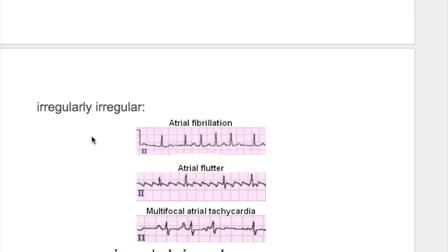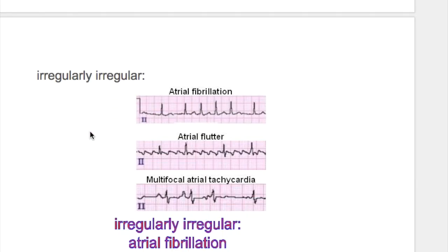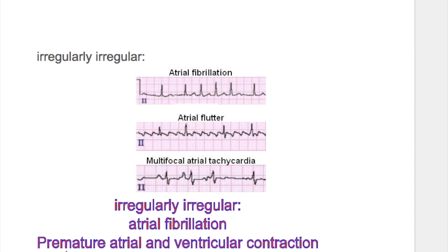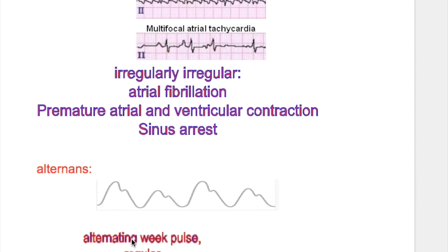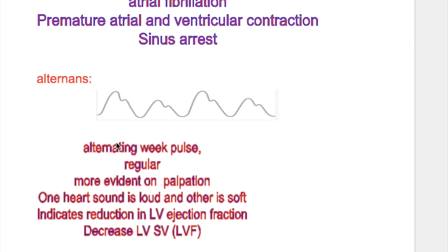An irregularly irregular pulse occurs in atrial flutter, atrial fibrillation, premature atrial and ventricular contractions, and sinus rhythm abnormalities.